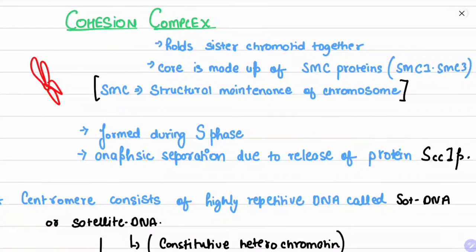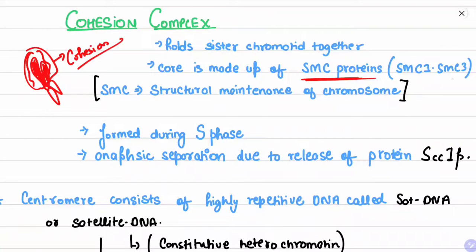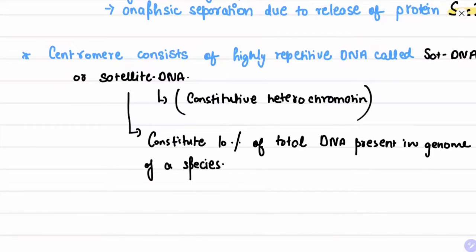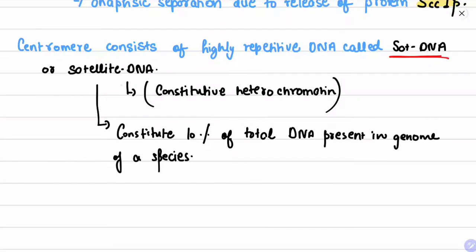The cohesin complex is a complex that holds sister chromatids together. It is made up of SMC proteins — SMC1 and SMC3 — where SMC stands for Structural Maintenance of Chromosomes. The cohesin complex is formed during the S phase, when DNA replication takes place. Anaphasic separation — the separation of sister chromatids — occurs due to release of the protein SCC1p.